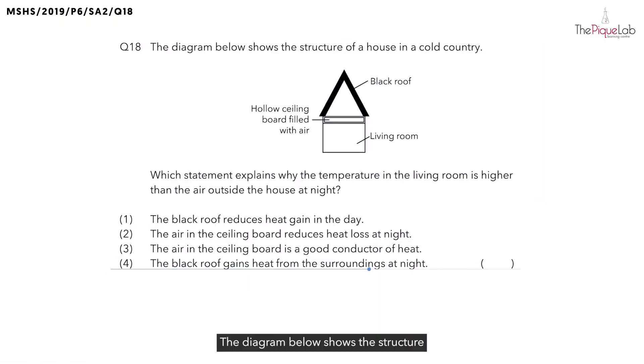Question 18. The diagram below shows the structure of a house in a cold country. What is interesting for cold countries is usually the houses always have a black roof. What is so special about the color black? We know that black is a good absorber of heat.